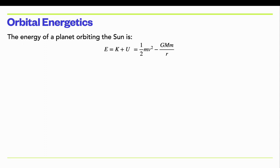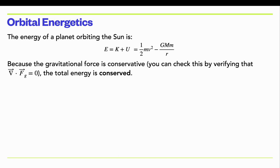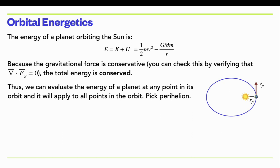Because the gravitational force is conservative, the total energy is conserved. So because it's conserved, we can evaluate it at any point in the orbit of the planet around the Sun and get the same value. Let's pick the perihelion point where the planet is closest to the Sun. We'll plug in vp, the perihelion velocity, and the perihelion distance.